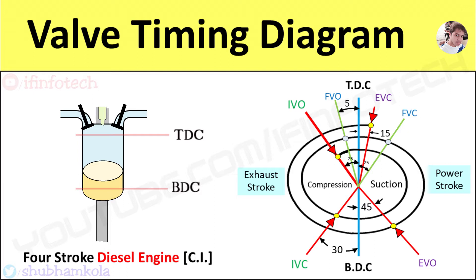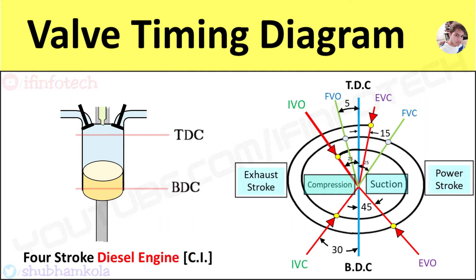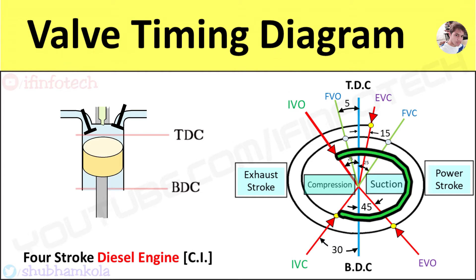In this cycle there are mainly four strokes: suction stroke, compression stroke, power stroke, and exhaust stroke. In the theoretical diagram, the suction valve opens at the TDC position of the piston, but in the actual valve timing diagram, the inlet valve opens 25 degrees before the TDC position of the piston.